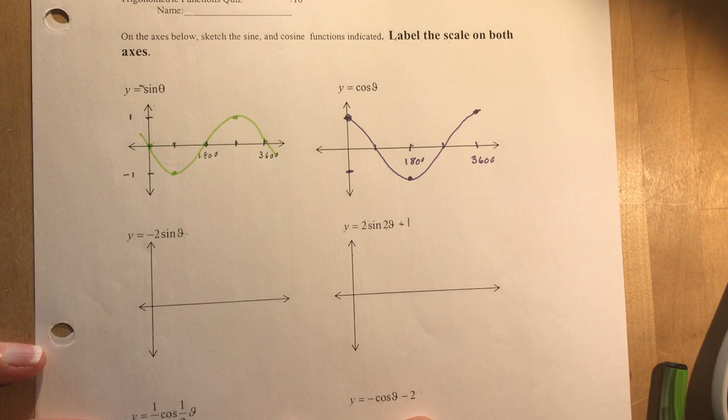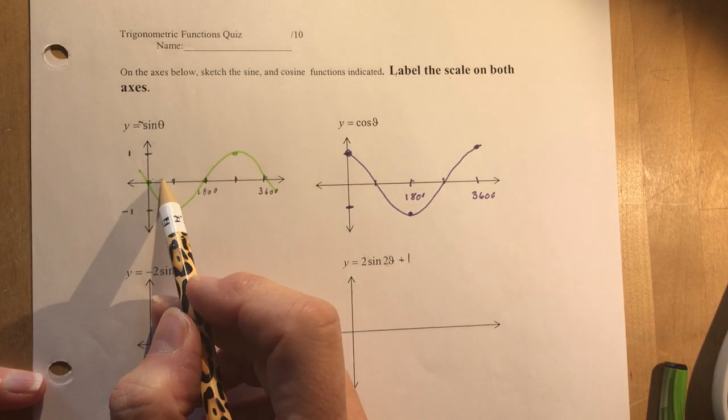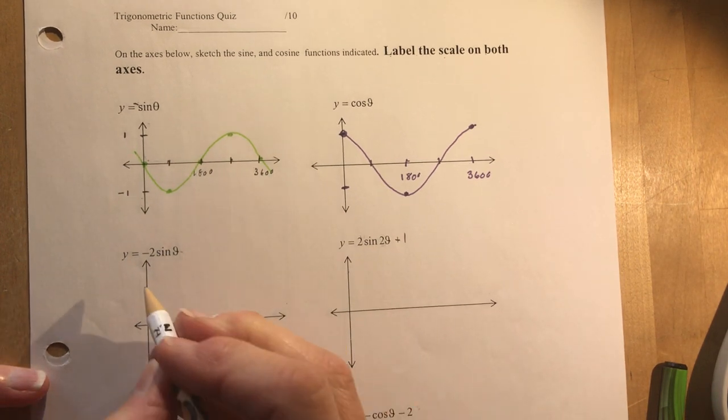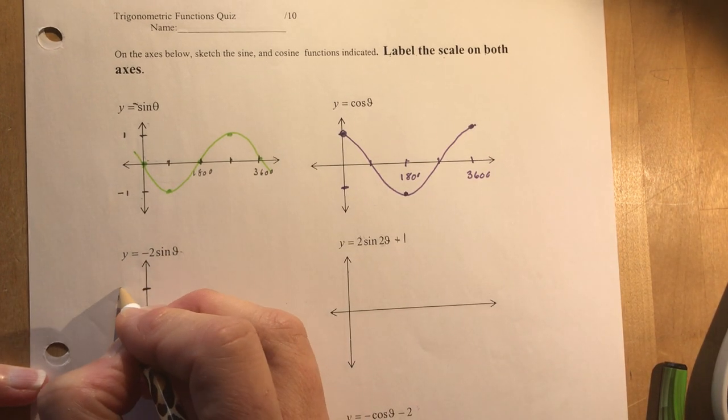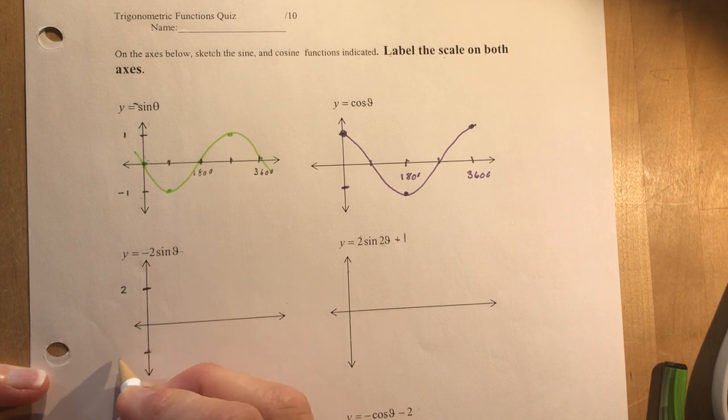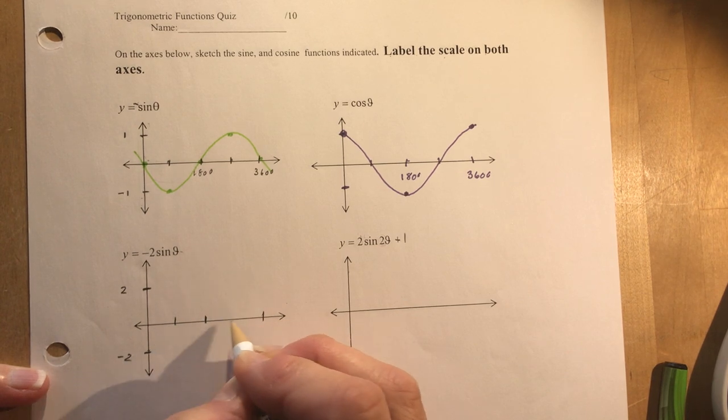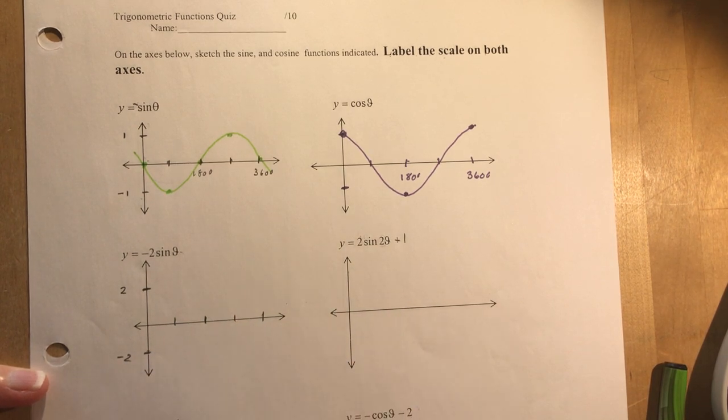The next one, y equals minus two sine theta. Well, it's going to be the same as this green graph, right, except I'm going to change the scale and make those plus and minus two. So that's all I have to do here. I'm going to say this is two, this is minus two.